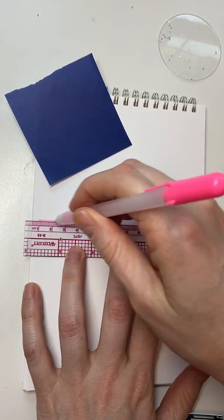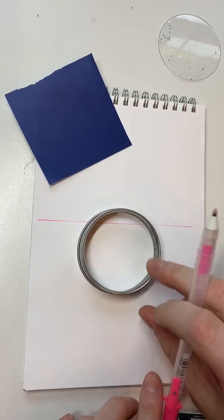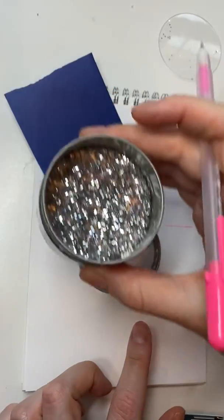You're going to draw a line. And then you're going to use some sort of circle template. This is the top of a jar of glitter.